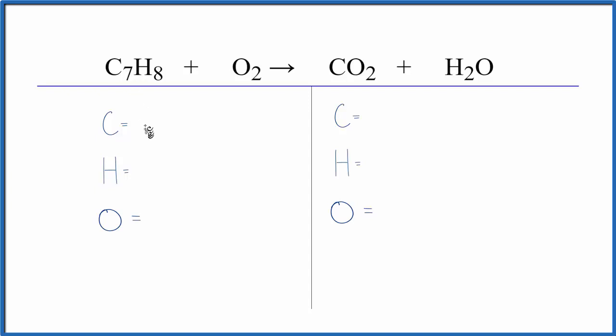So we have seven carbons, eight hydrogens, and two oxygen atoms. On the product side, we have one carbon, two hydrogens, and then two oxygens, plus, don't forget, the oxygen with water. So we have three.